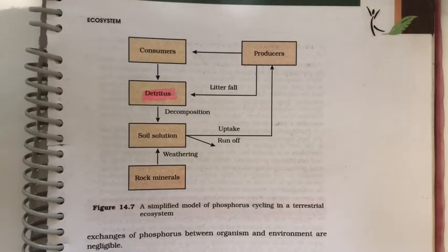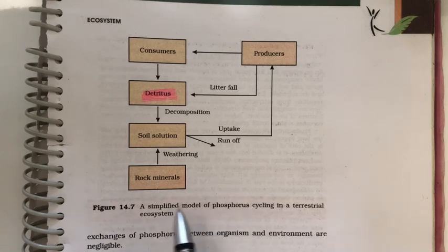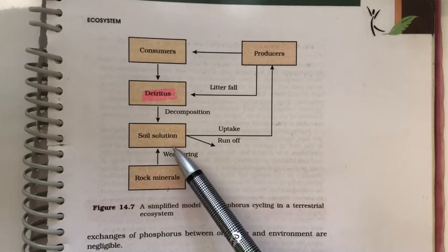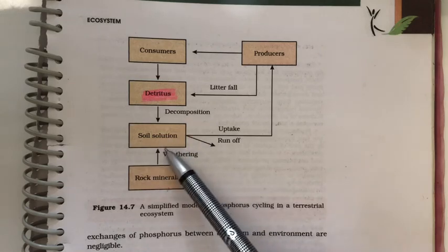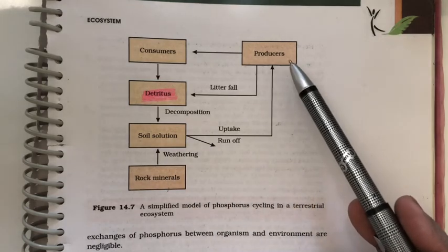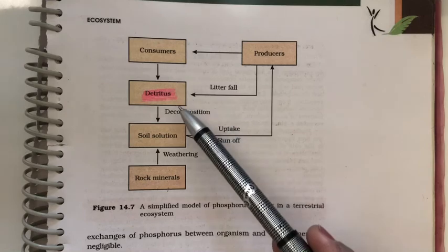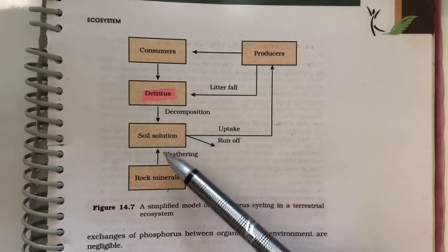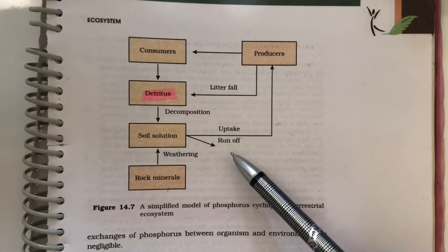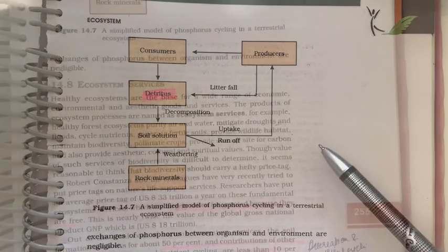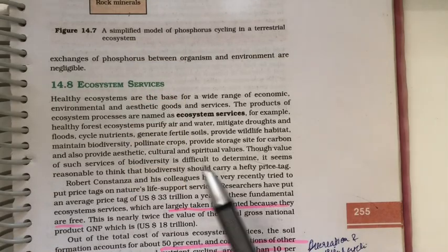An example of a sedimentary nutrient cycle is the phosphorus cycle. Phosphorus is found in rock minerals and, when dissolved in water, forms a soil solution that is taken up by plants (producers) and then consumed by consumers. When organisms die, detritus is returned to the soil. Some phosphorus is lost through runoff — dissolved in water and moving out of the ecosystem.